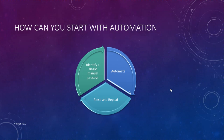How can you start with automation? It's very easy — all you have to do is identify a single manual process in your organization that is easy to automate. For example, let's say restarting servers. You then automate that single process by using automation tools like Ansible.